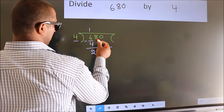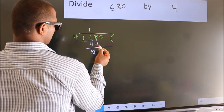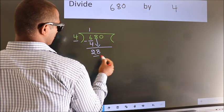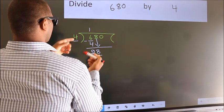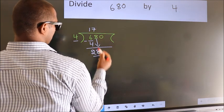After this, bring down the beside number. So, 8 down. So, 28. When do we get 28? In 4 table. 4 times 7 is 28.